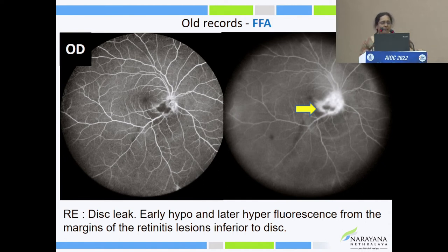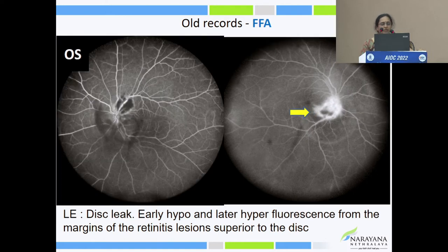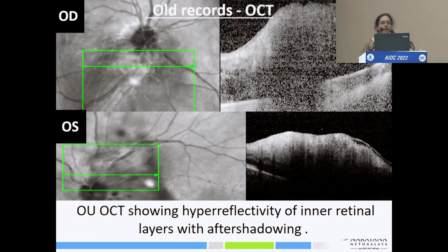The patient gave history of scrotal herpes a few years back and is a known diabetic. Old records showed blocked fluorescence in the early phase with staining and disc leakage in the late phase. OCT showed hyperreflectivity with after-shadowing effect. They thought it could be post-fever retinitis, and since he is diabetic with a history of scrotal herpes, they gave a posterior subtenon injection to control the inflammation.